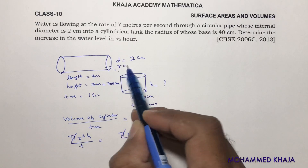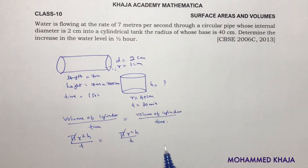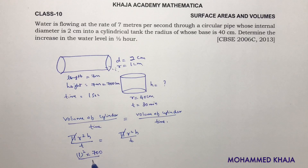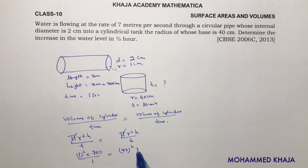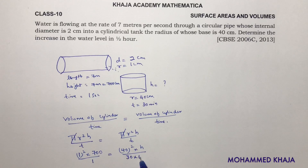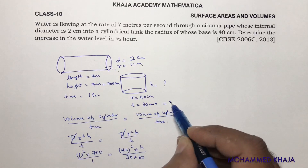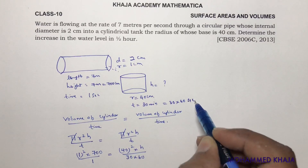The diameter of the pipe is 2 centimeters, so the radius is 1 centimeter. Now substituting: on the pipe side, r = 1, h = 700 cm, time = 1 second. On the tank side, radius = 40 cm, so r² = 40². The time is 30 minutes, which I write as 30 × 60 seconds, because the pipe side uses seconds and we need consistent units.